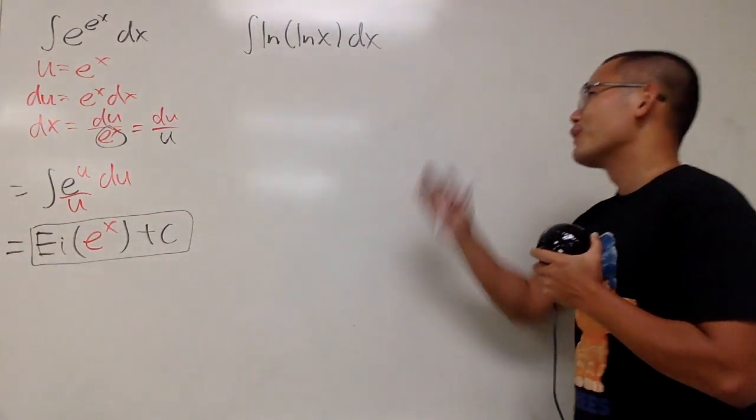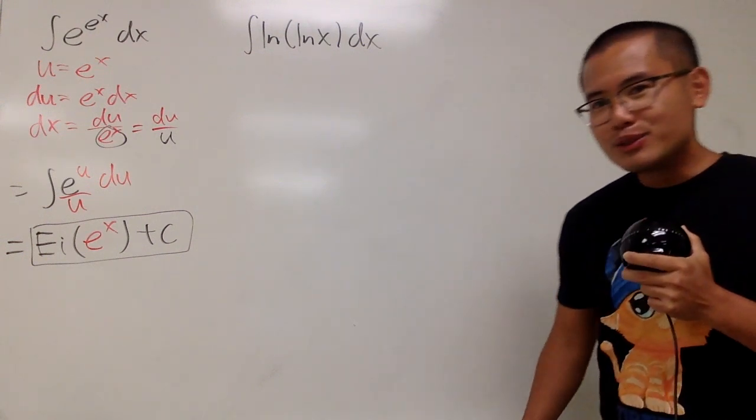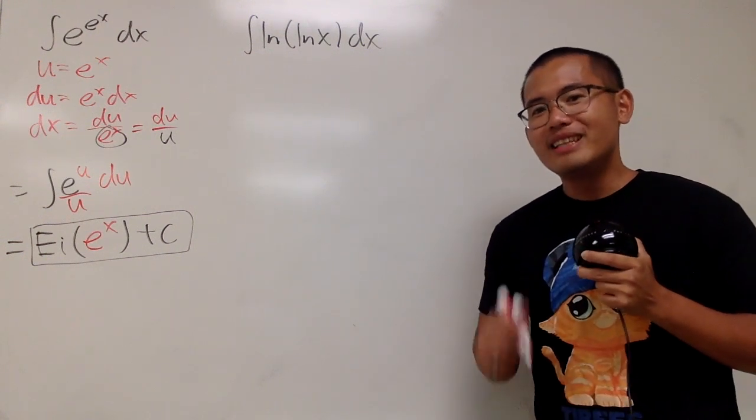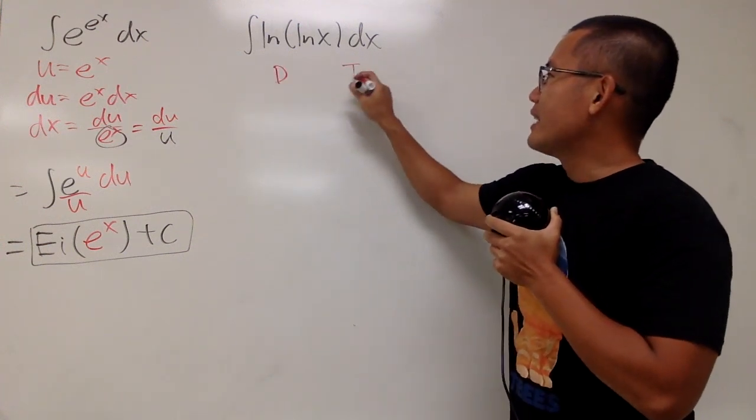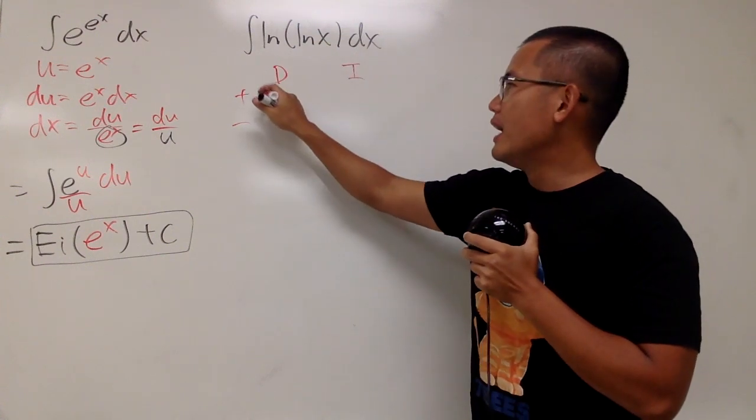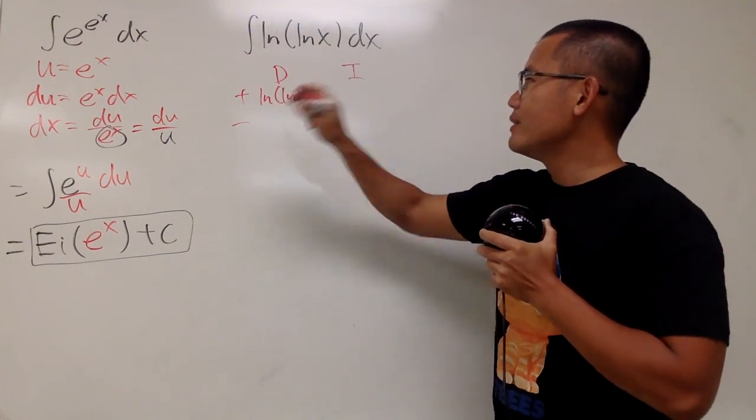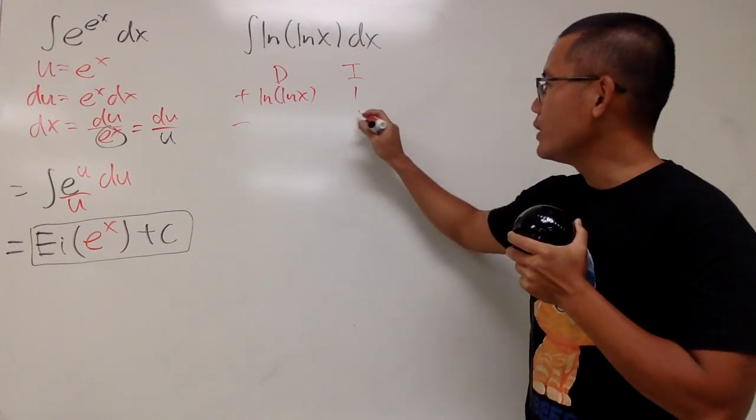Now, for the second one, we have the integral of ln of ln of x. We can actually just do a really nice integration by parts. Very, very nice. Let me show you. D and then I, of course, plus, minus. We are going to differentiate ln of ln of x and let's integrate just 1. Integrating 1, we get x.